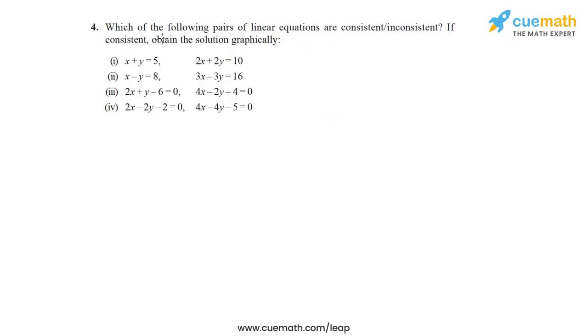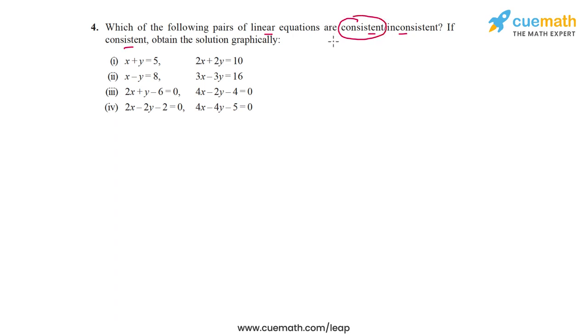Question 4 asks which of the following pairs of linear equations are consistent or inconsistent, and if consistent, to obtain the solution graphically. For each pair of linear equations, we have to find whether it is consistent or not by finding the ratios of the coefficients. For the pairs which are consistent, we have to find the solutions graphically.